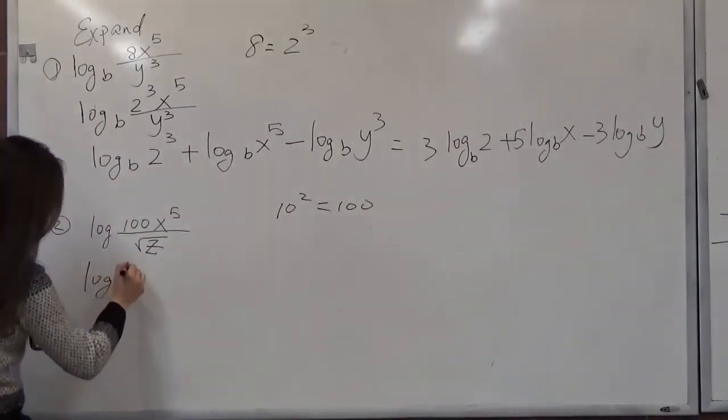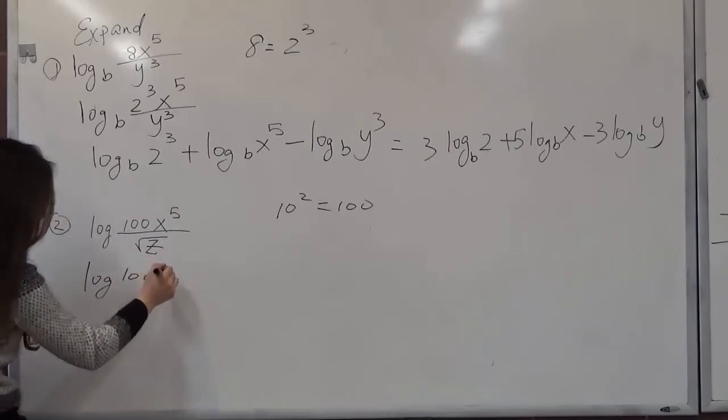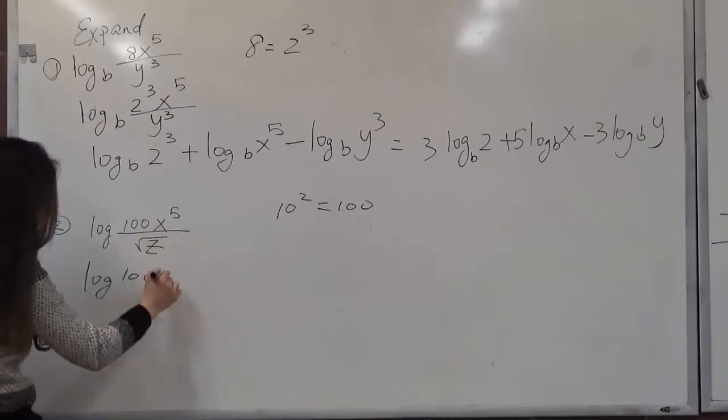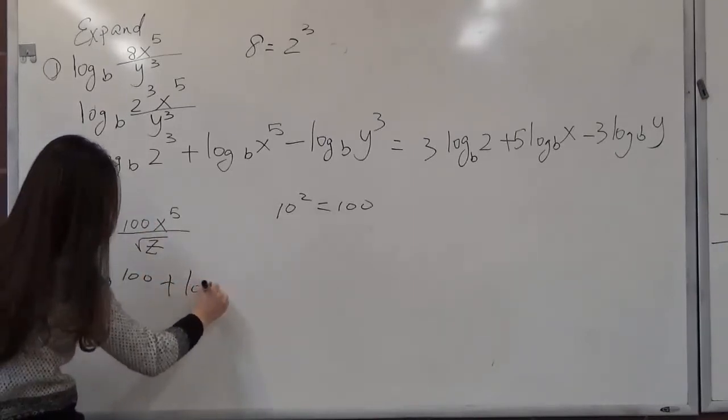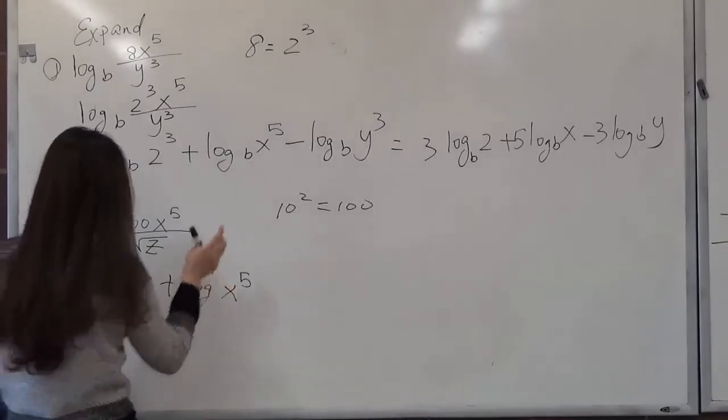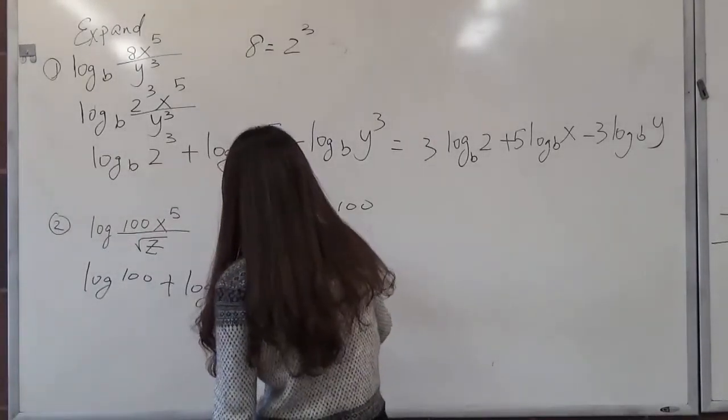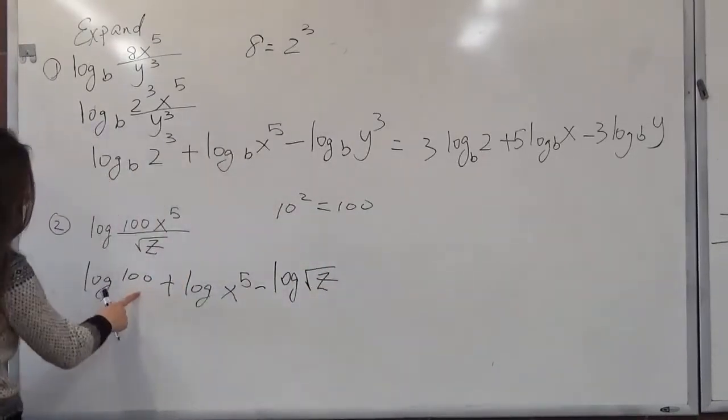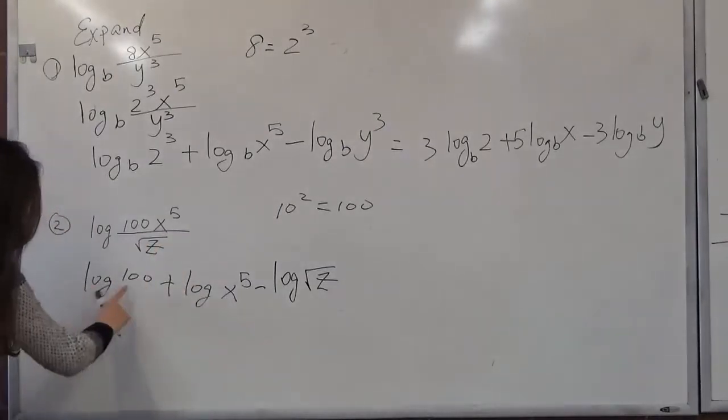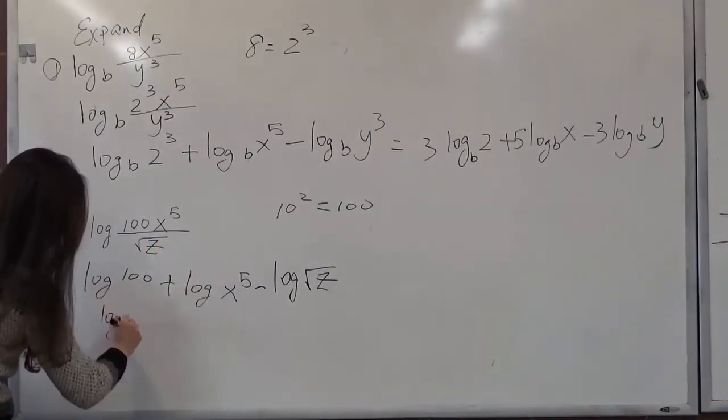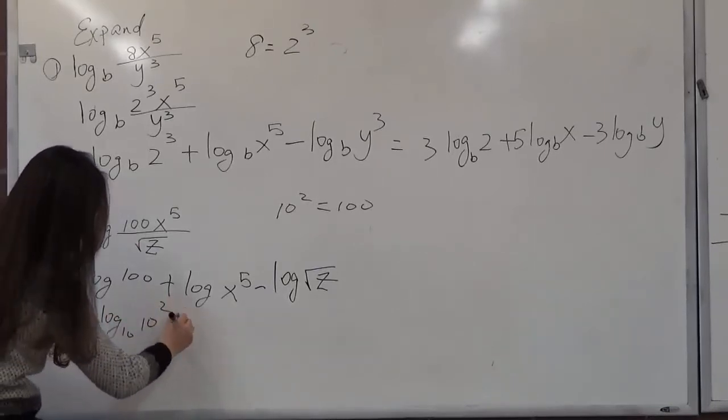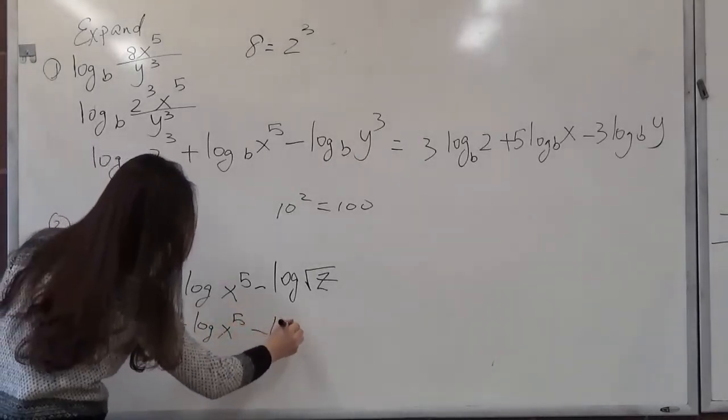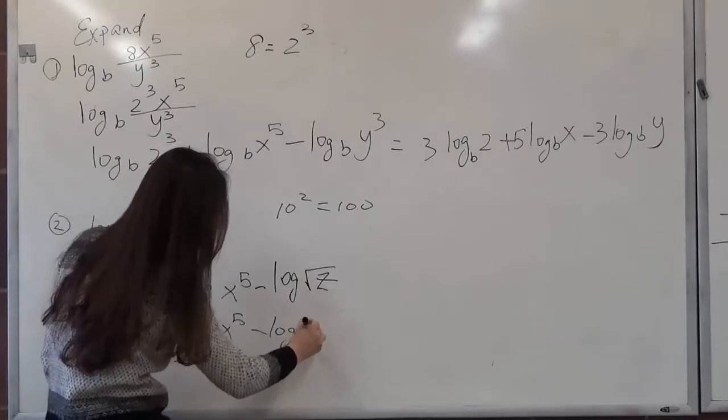Rewrite log 100, 10 to the second power. This is a multiplication. So we rewrite multiplication to addition log x to the fifth power. That's a quotient. So take away log square root of z. That means z raised to one half power.